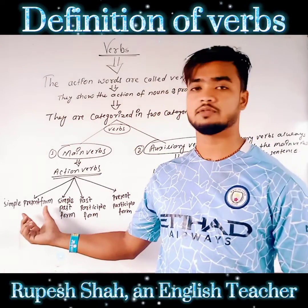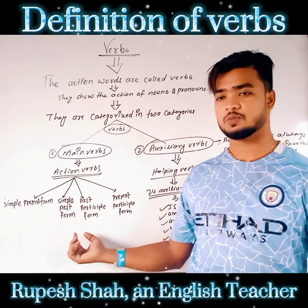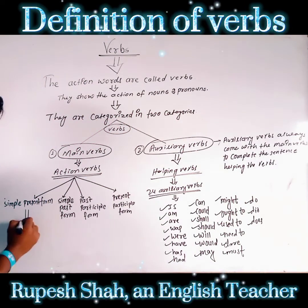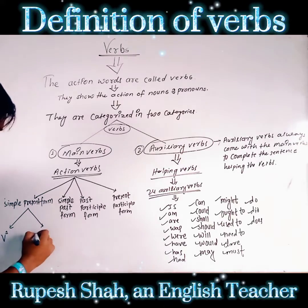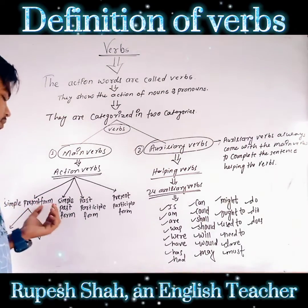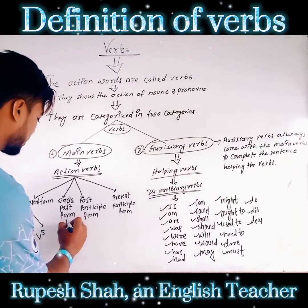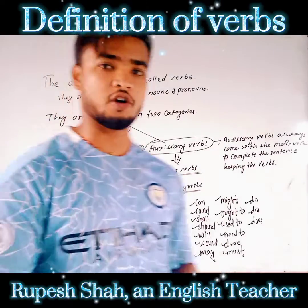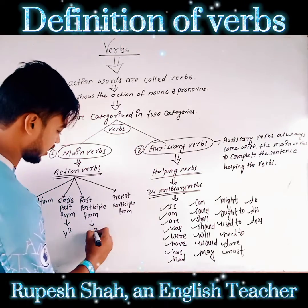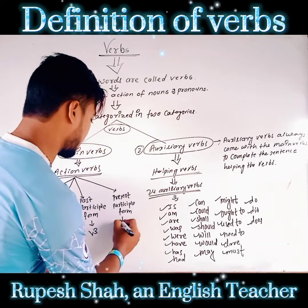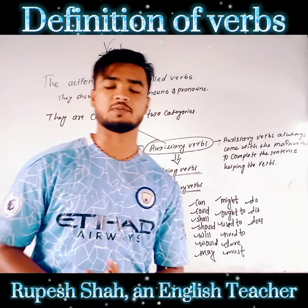They are: simple present form of the verb, simple past form, past participle form of the verb, and present participle form of the verb. Simple present form is also categorized in two different categories — they are also known as verb 1 and verb 5. Verb 2 is the simple past form of action words or main verbs. Verb 3 is the past participle form of action words. Verb 4 is the present participle form of action words.